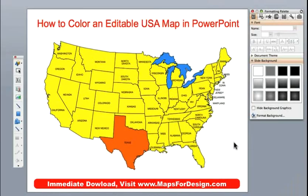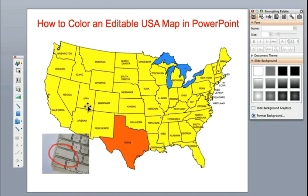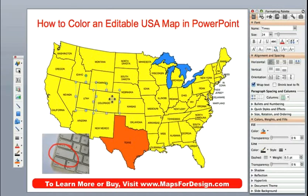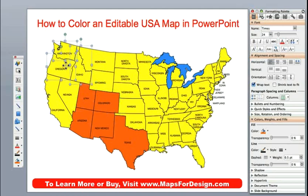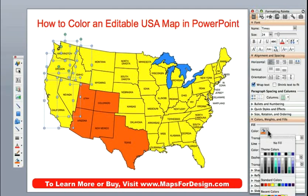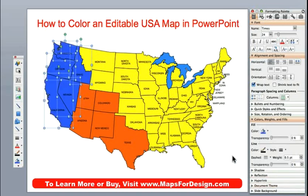We can also select several states at the same time, maybe to set up a sales territory or something like that. So I'm going to hold down the shift key on my keyboard and I'm going to click on Utah, Colorado, New Mexico, Arizona and just give them the same orange color. And let's say we wanted to set up another territory — I'm going to go Washington, Idaho, Oregon, California and Nevada, and we will just pick a different color, let's say blue. And there we go.